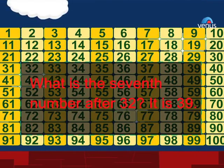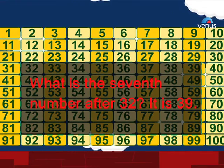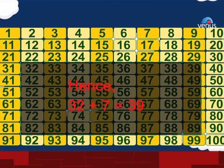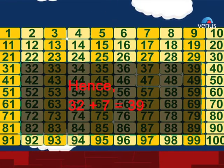What is the seventh number after 32? It is 39, hence 32 plus 7 equals 39.